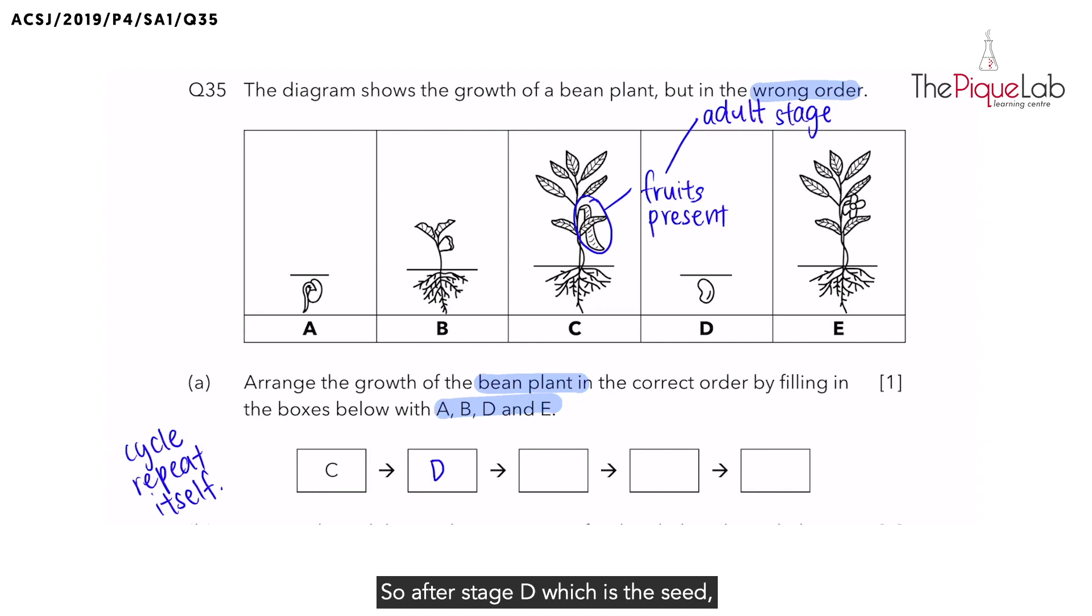So after stage D, which is the seed, we have A because the roots will actually emerge first, followed by B, which is our young plant, where there are flowers present.